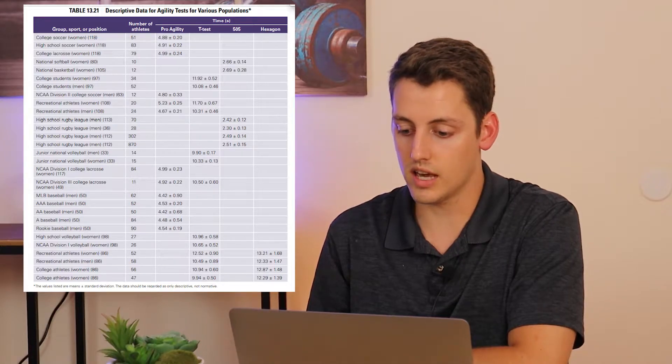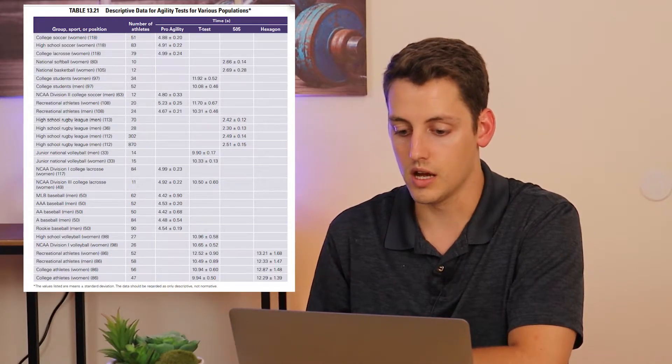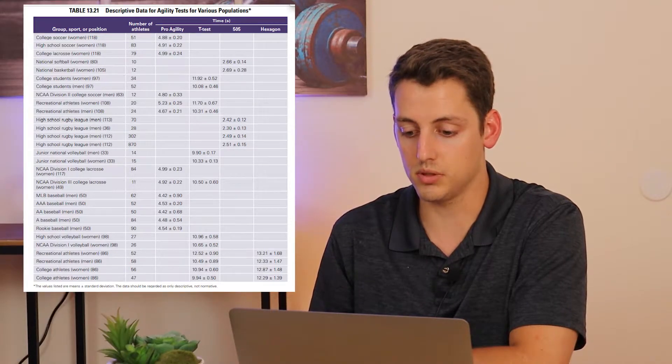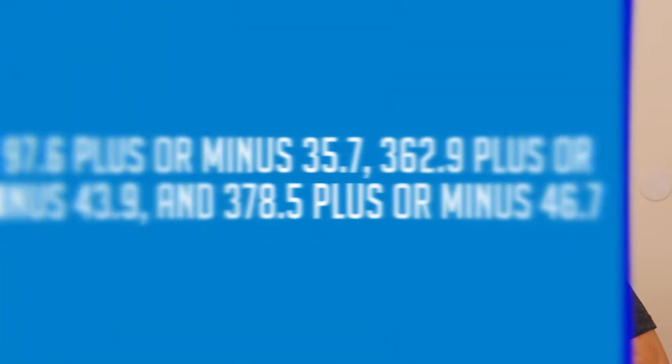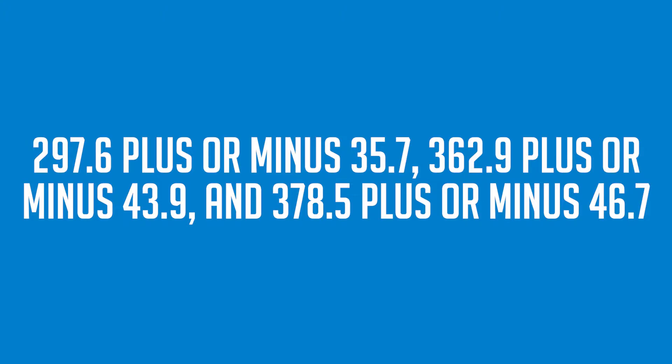Here we must compare the athlete's weakest score compared to the normative data of the sport. For his body fat percentage, 11% places this athlete at the very lean, which is normal for soccer players. Looking at his pro agility score and comparing it to the normative data found in the textbook for a division 2 college men's soccer player, the standard is 4.8 seconds plus or minus 0.33 seconds from his pro agility test.